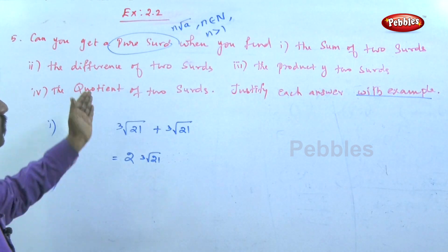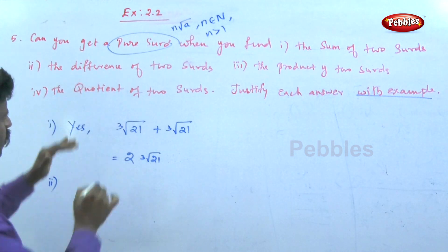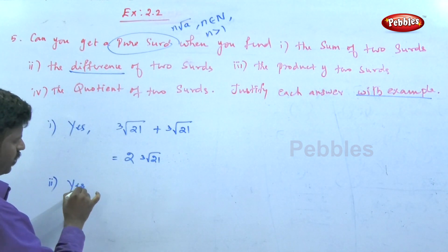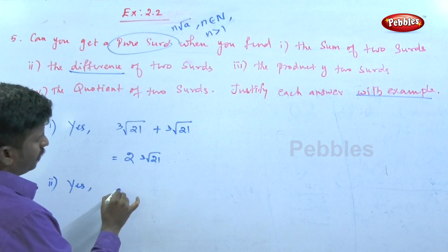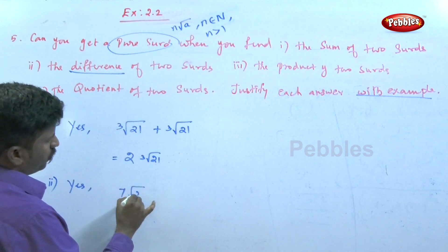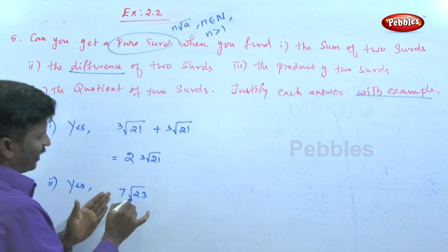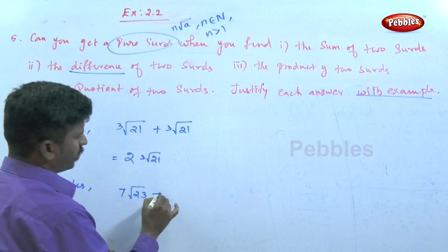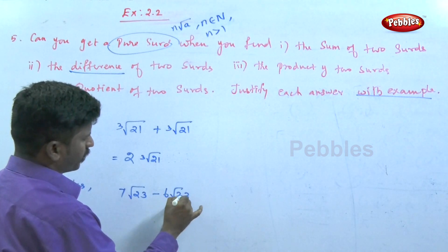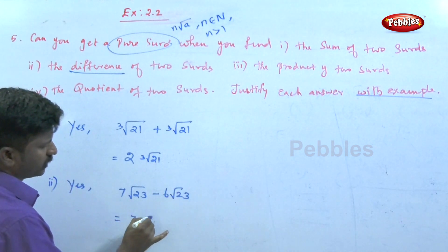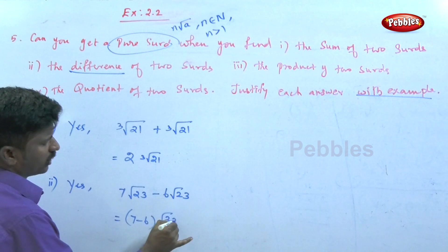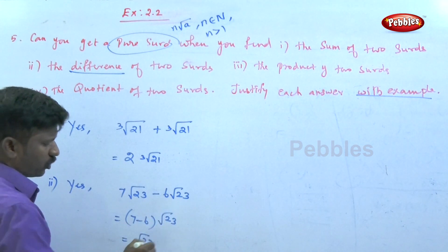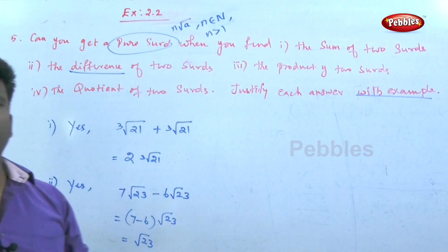The difference of two surds: for example, the seventh root of 23 minus 6 times the seventh root of 23. The seventh root of 23 is a common factor, so we get 7 minus 6, which is 1, times the seventh root of 23. The difference of two surds is also a surd.